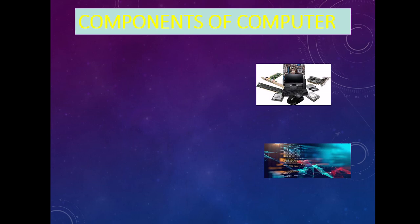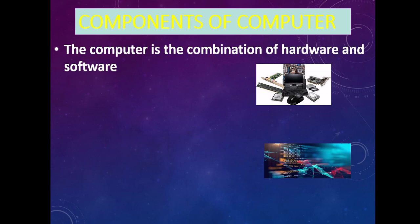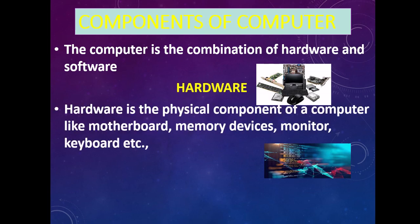Components of computer. The components of a computer play an important role — without them, there is no computer at all. A computer is a combination of hardware and software. Hardware refers to all the physical components of the computer — all the internal parts and external parts. Examples include motherboard, memory, devices, monitor, and keyboard — all of these are called hardware.